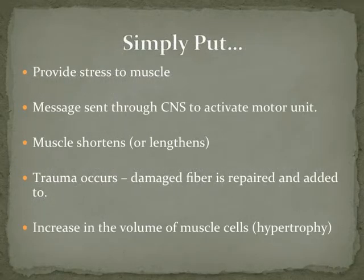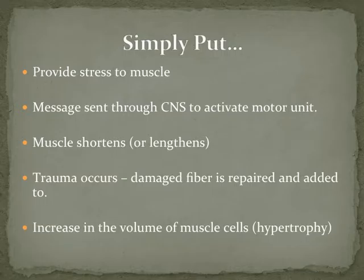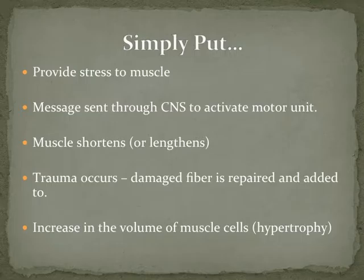To sum it up in a simple story-like fashion: we provide stress to the muscle — basically we put weights in our hands and on our bodies to lift. The message is sent through the central nervous system from our brain to activate the motor unit. This motor unit tells the actin and myosin to slide or pull against each other in order for the muscle to contract. When muscles contract, trauma occurs — we have damaged fibers which are repaired and more is added, so hypertrophy occurs. This causes an increase in the volume of the muscle cell, which is called hypertrophy. That is how muscles work and the basic foundations of strength training.